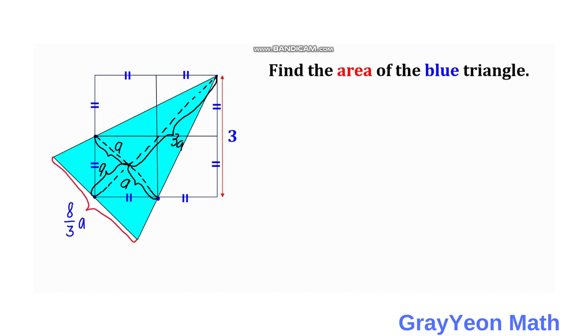Okay, so next is we notice that this length 4a, this length, is actually the hypotenuse of this isosceles right triangle.